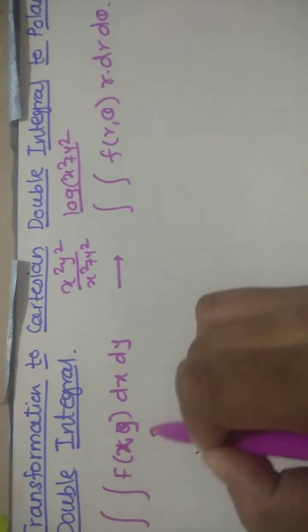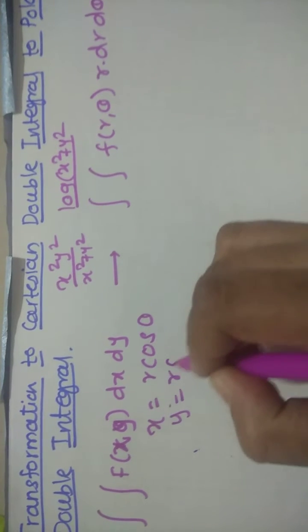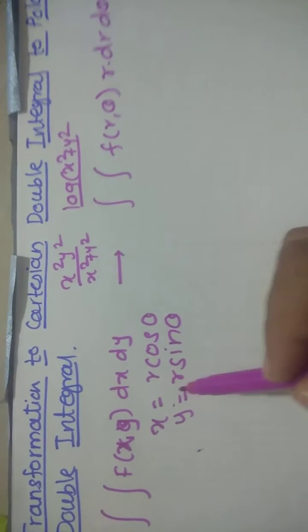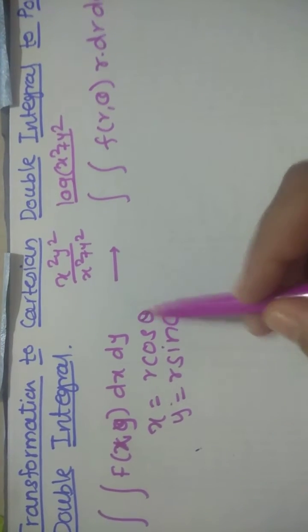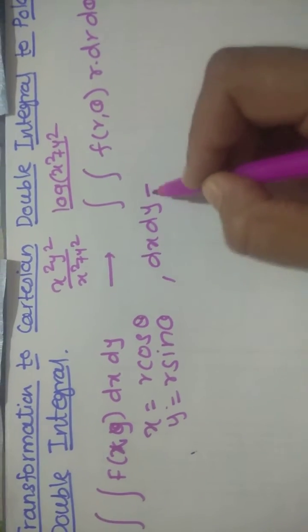You have to put x is equal to r cos theta and y is equal to r sin theta. Replace x by r cos theta and y by r sin theta, and this value of dx dy in polar coordinate system is r dr d theta.